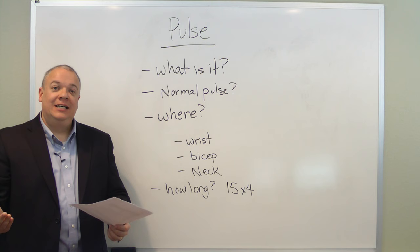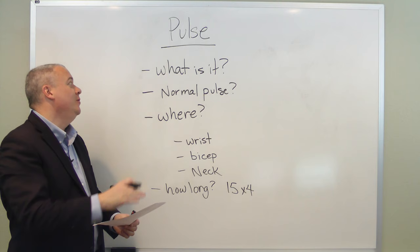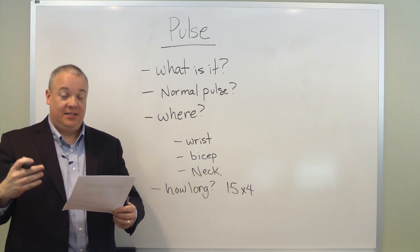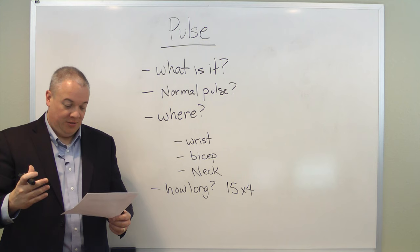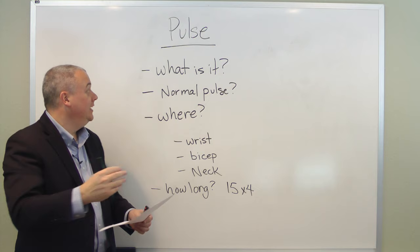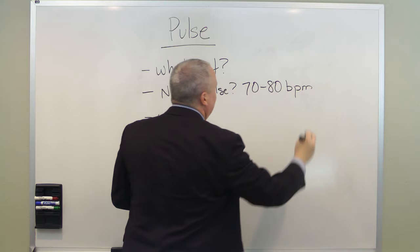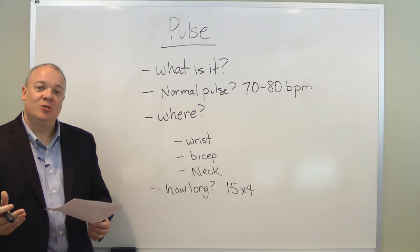A pulse is created when the left ventricle pumps blood into the arteries — their elasticity causes them to expand as they receive oxygenated blood, and this expansion is called the pulse. The pulse should be rhythmic. The average normal pulse is between 70 to 80 beats per minute.